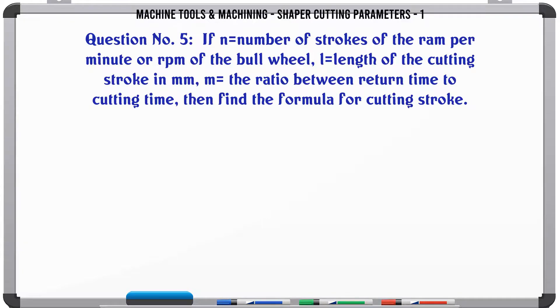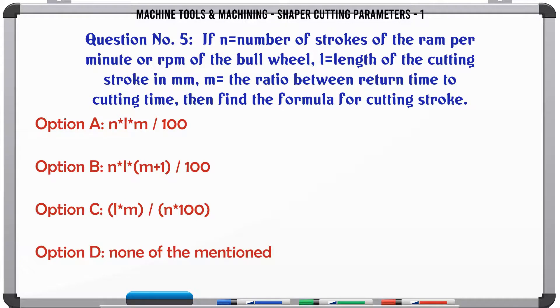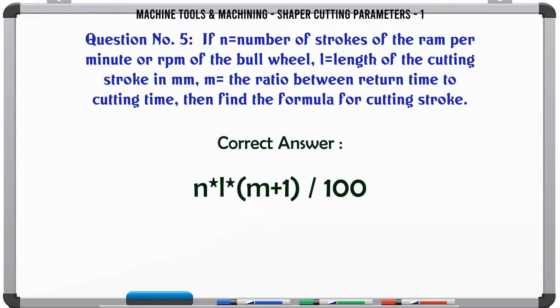If n=number of strokes of the RAM per minute or RPM of the bull wheel, l=length of the cutting stroke in mm, m=the ratio between return time to cutting time, then find the formula for cutting stroke. A. n*l*m/100. B. n*l*(m+1)/100. C. (l*m)/(n*100). D. None of the mentioned. The correct answer is: n*l*(m+1)/100.